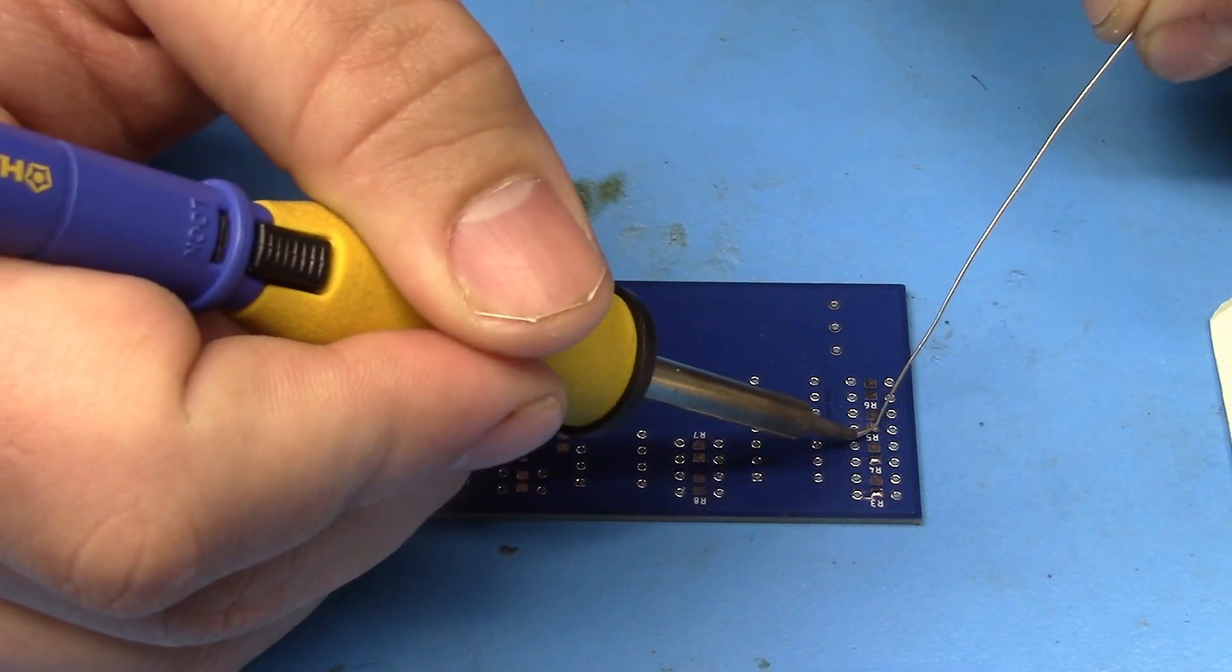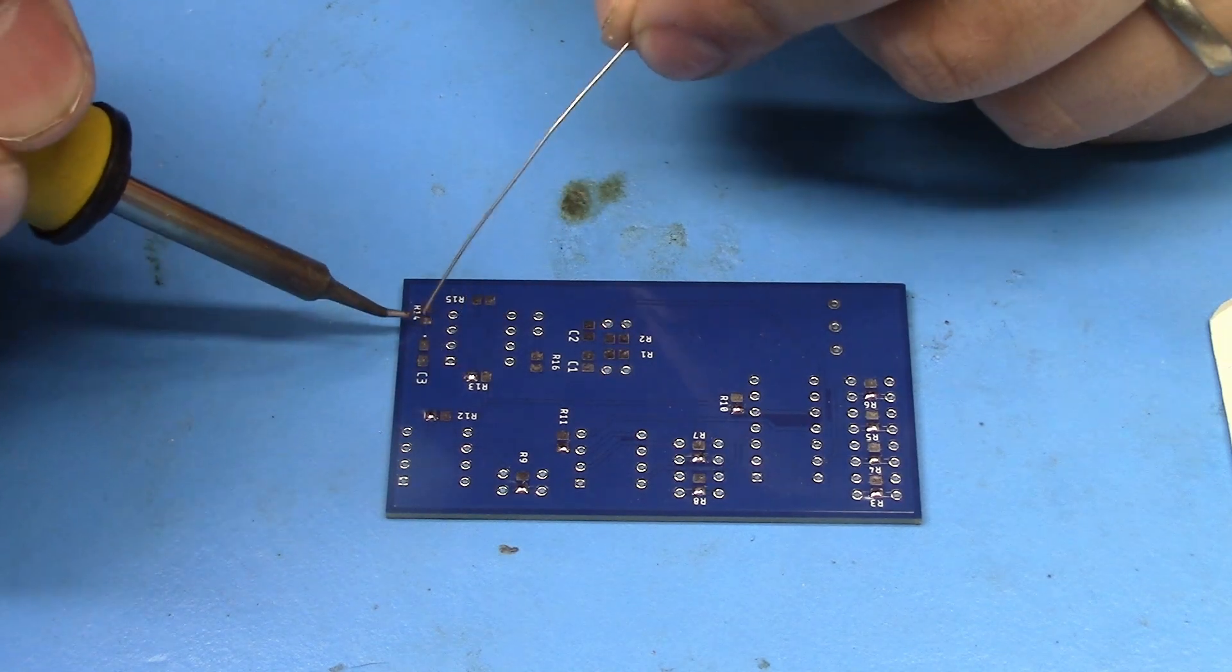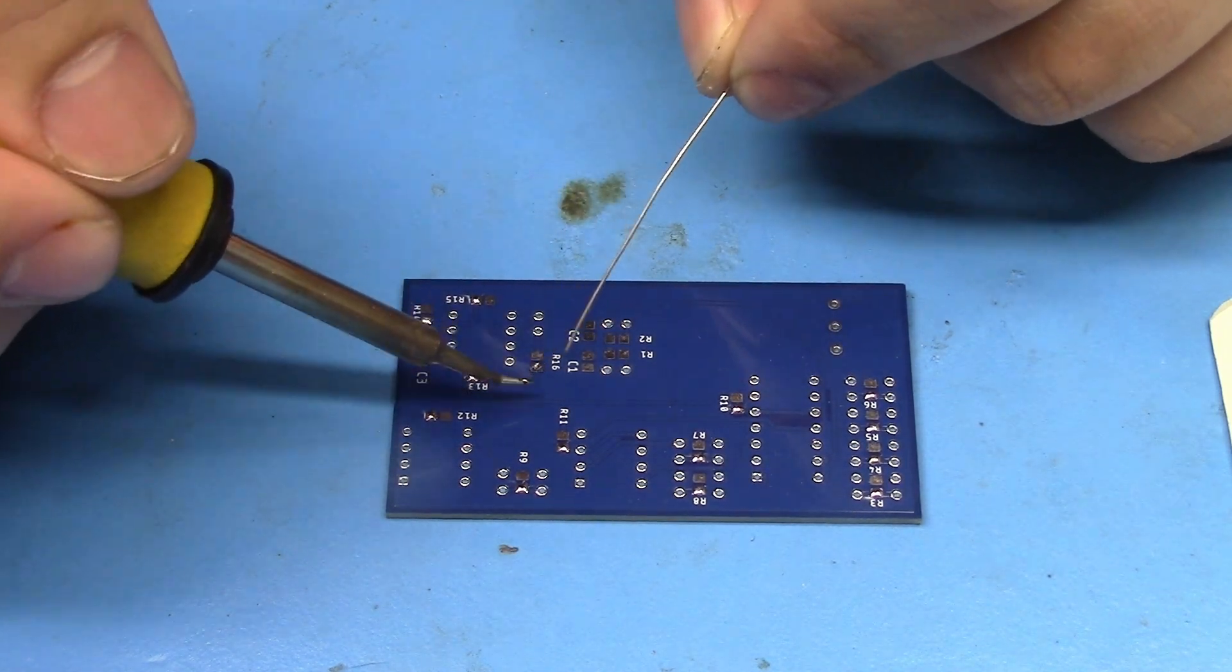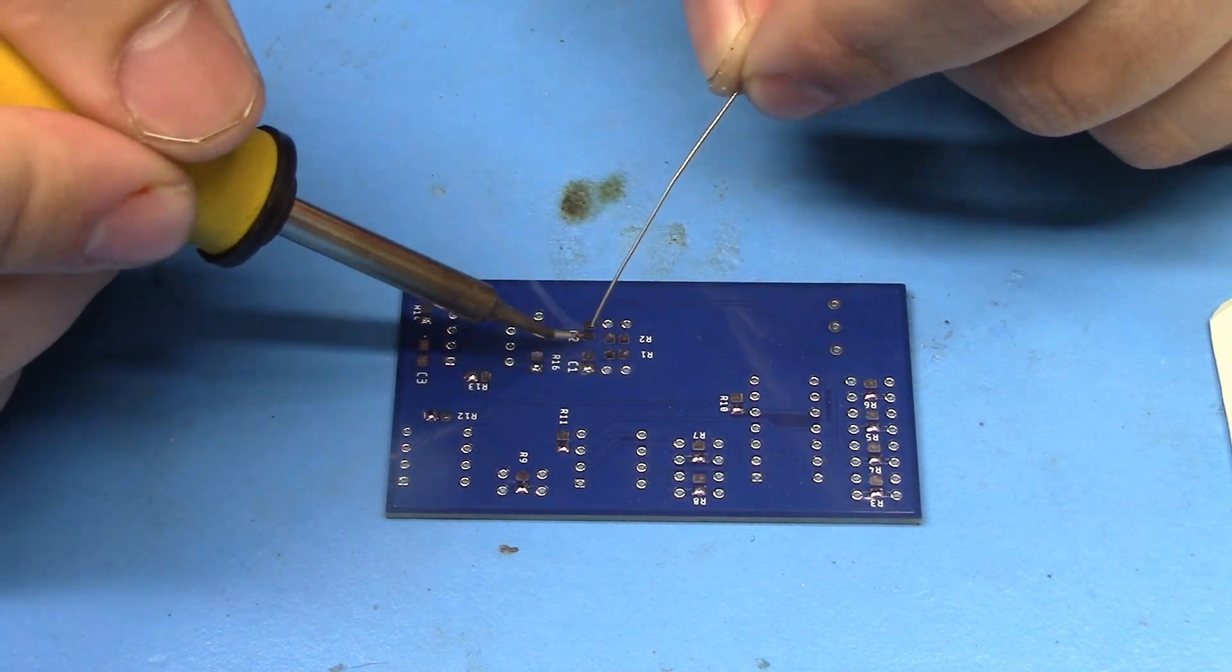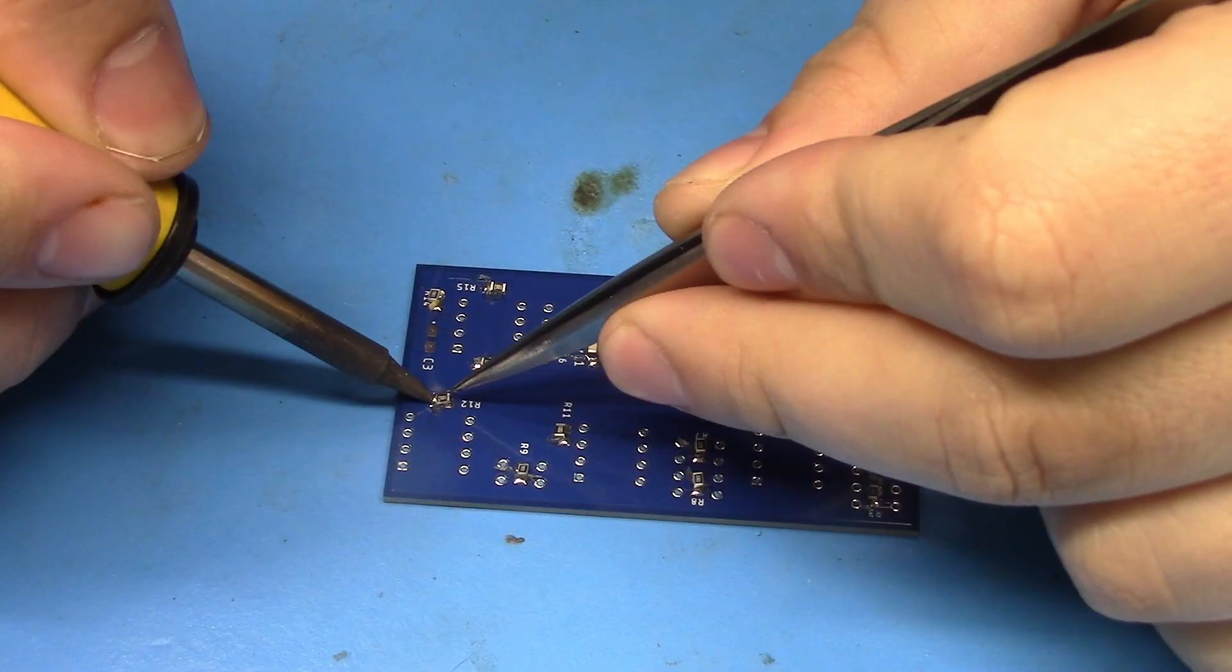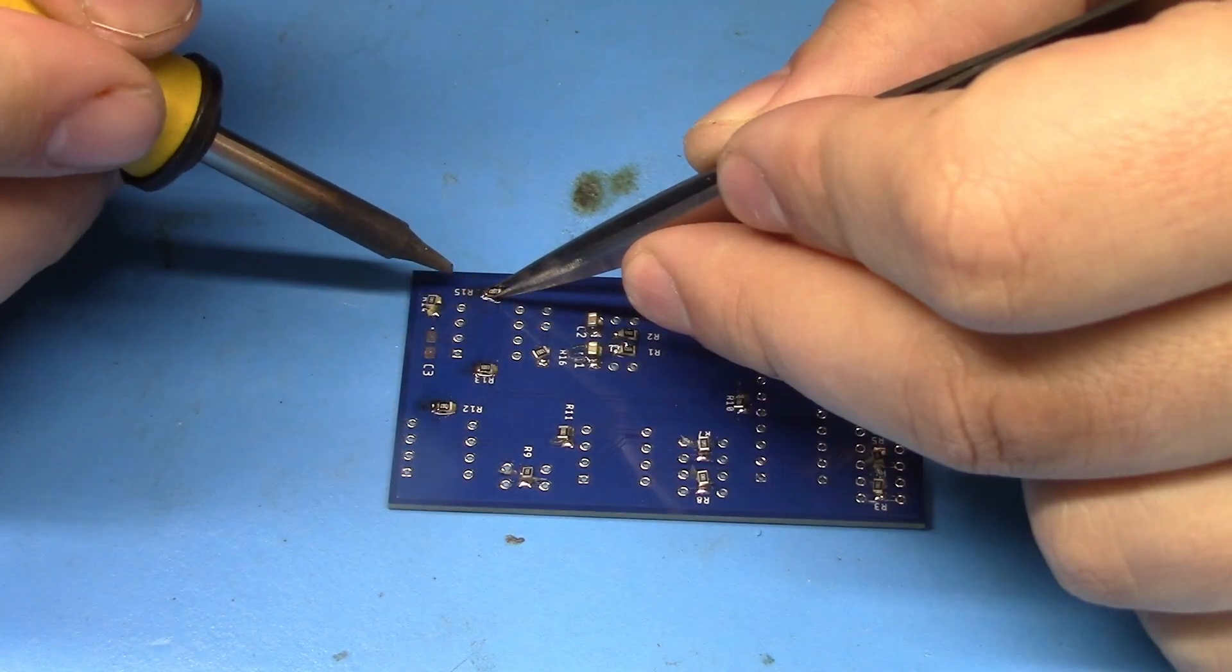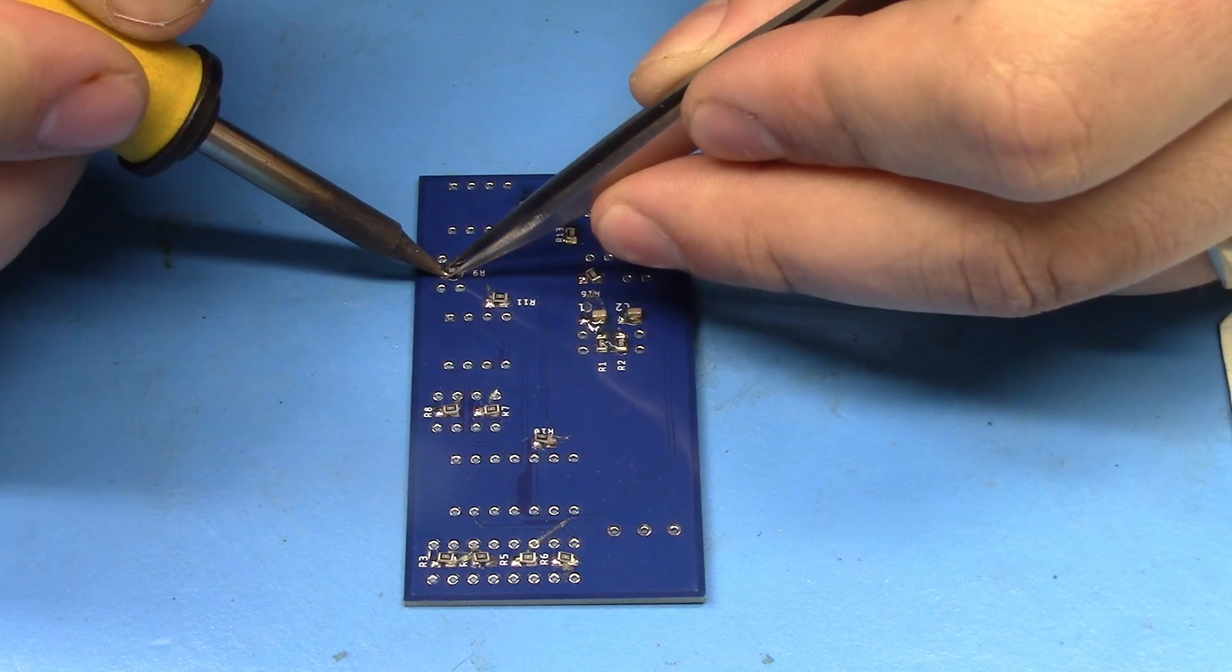PCBWay delivered these awesome PCBs, so let's go ahead and solder all the components on the backside of the PCB first. The best way to solder surface mount components such as these resistors is to solder one pad, and slide the component into that solder, then solder the other pad.